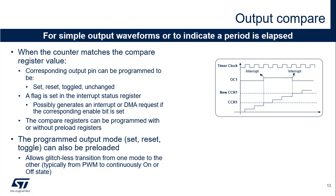A compare event is generated when the counter matches the value of the compare register. This event can trigger an interrupt or DMA request and can be reflected on the corresponding output pin by an Output Set, Output Reset, or Output Toggle. The compare register can be preloaded; the preload must be disabled if multiple compare values must be written during a counting period. Preload mode must be preferred for applications with real-time constraints, as this gives a higher time margin for the software to update the compare register. The output compare mode can also be preloaded to allow glitchless transition from a PWM mode to a forced on or off state.